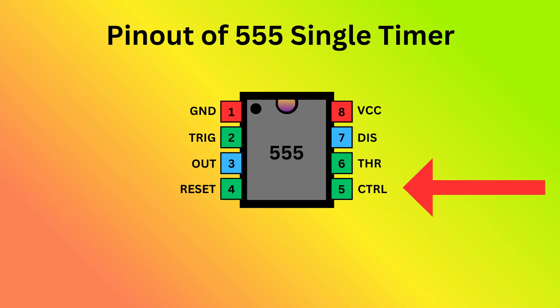Pin 5 is control. It allows you to control the threshold voltage levels that the internal comparators use to set and reset the flip-flop.